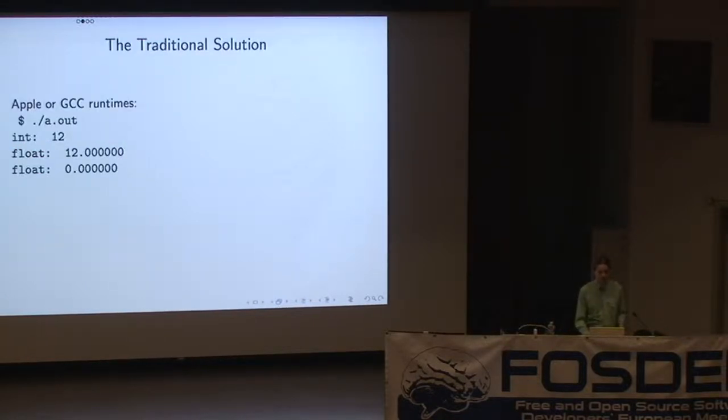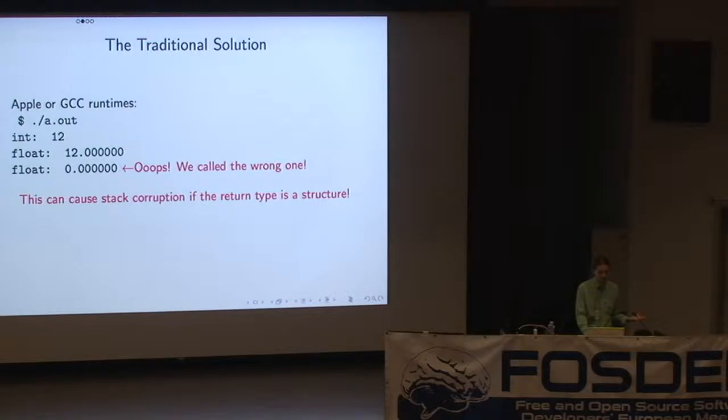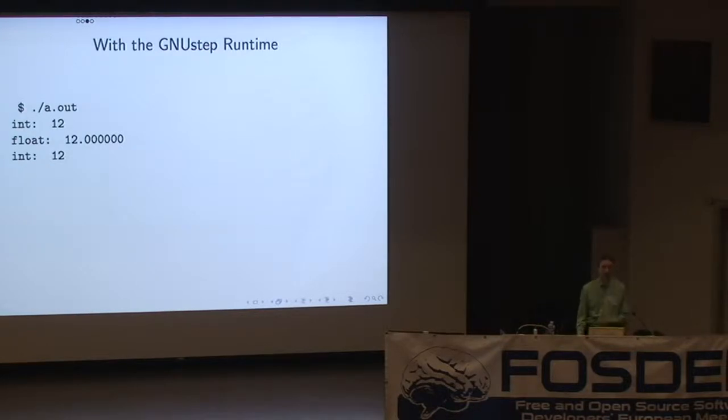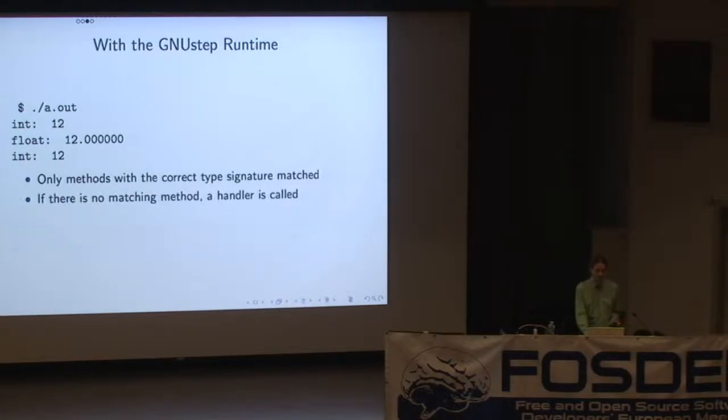So what happens if you run this on a Mac? Well, the first call works, the second call works, and oops, you've called a function which expects a floating point value, but you put your argument in an integer register, so it just silently does the wrong thing. And if you do this in a slightly more extreme case, if it's a function returning a structure and a function not returning a structure, then you don't just get the wrong result, you get random stack corruption. And that's not ideal. On SPARC, you get an illegal instruction exception and a trap and an abort, and that's marginally better.